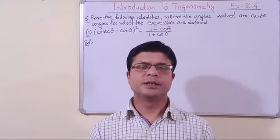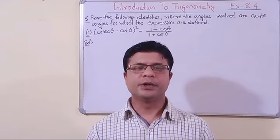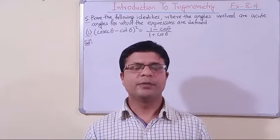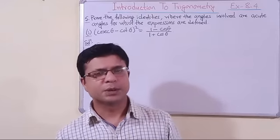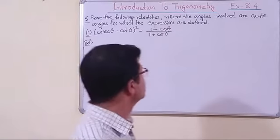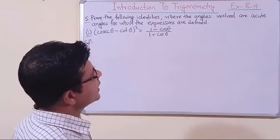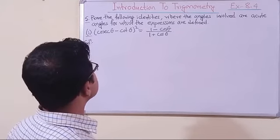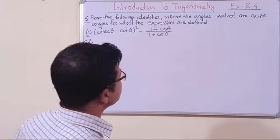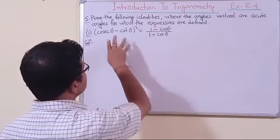Hello students, we are in the chapter Introduction to Trigonometry. We have taken Exercise 8.4 and from there let us do question number 5. Let us read the question: prove the following identities where the angles involved are acute angles for which the expressions are defined. In the first question, we have to prove the left hand side equals the right hand side.